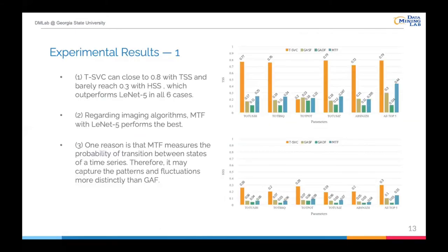Here are the experimental results for comparing different algorithms. We can see SVM-based classifier can achieve 0.8 with TSS and barely reach 0.3 with HSS. Regarding imaging algorithms, MTF with NeuralNetFire performs the best, but still has a large gap compared to TSVC algorithm. The reason might be MTF measures the probability of transition between states of a time series. Therefore, it may capture the patterns and fluctuations more distinctly than GAF. In other experiments, we didn't see expected performance with GAF algorithm.